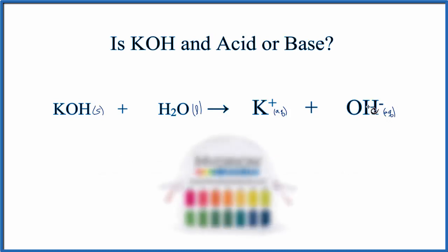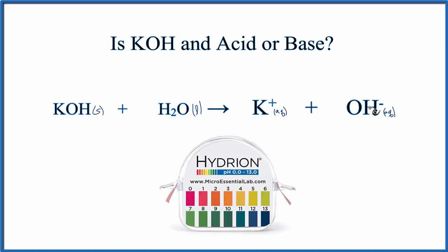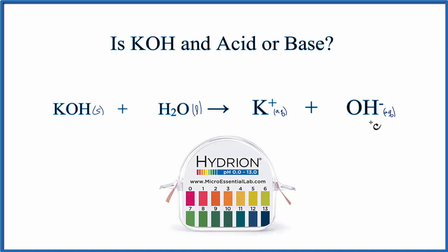If we tested the pH, we'd find that it would be well above 7, because KOH is a strong base. For something like HCl, which is an acid, the pH would be below 7.